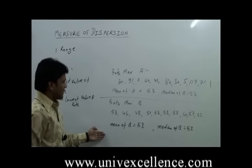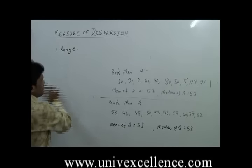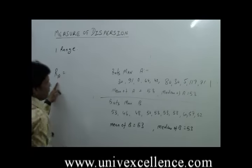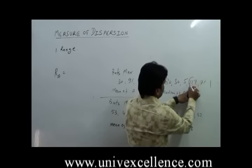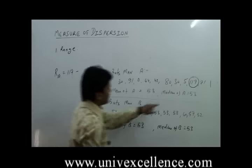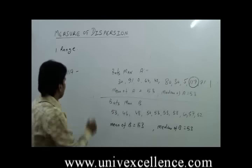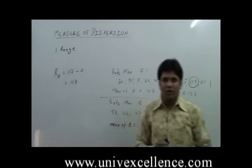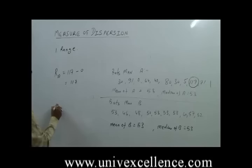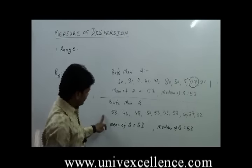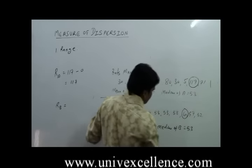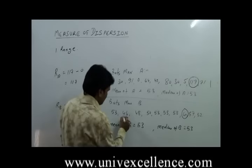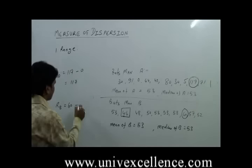Now if we want to find out the range of Batsman A and the range of B: Range of A — we are representing it as R_A. What is the highest value in this data? 117. What is the lowest value in this data? That is zero. So Range of A is obviously 117. And what about the Range of B? The highest value in this case is 60, minus the lowest value in this case, which is 46.